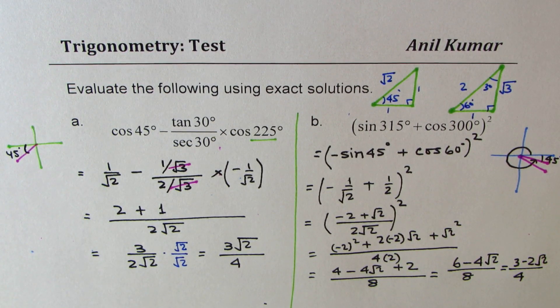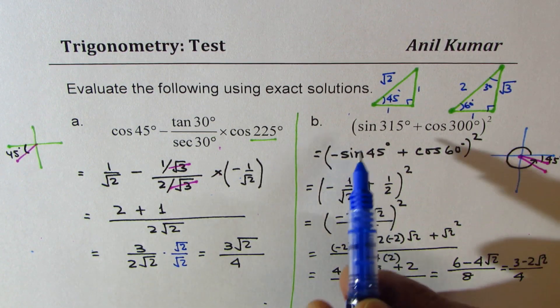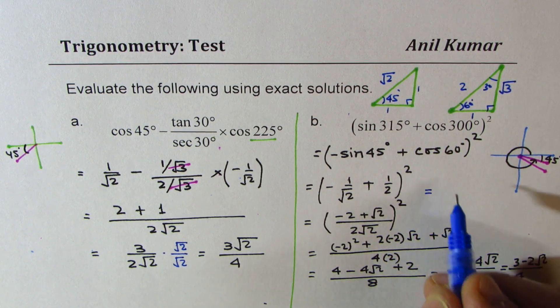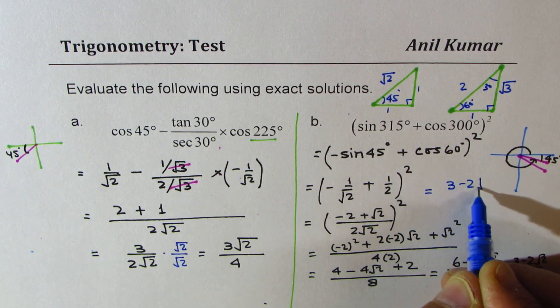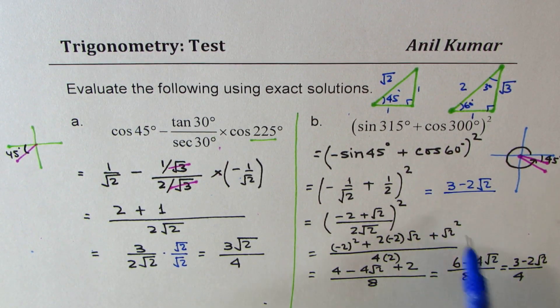So the exact value for the given expression is equal to 3 minus 2 square root 2 over 4.